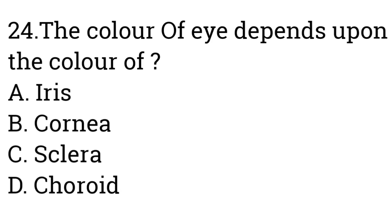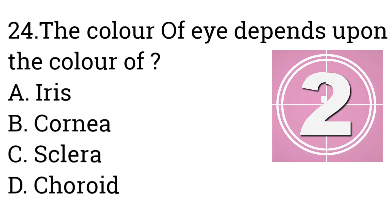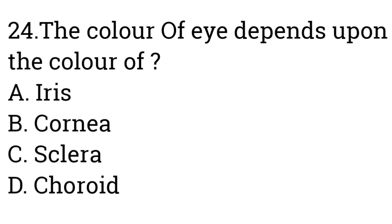Question number twenty-four: The color of the eye depends upon the color of — A: Iris, B: Cornea, C: Sclera, D: Choroid. Answer is Iris. The presence or absence of the pigment melanin in the iris determines the color of the eye.